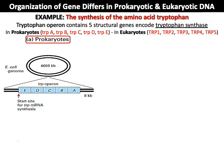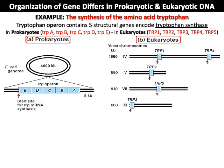As an example of the difference between prokaryotes and eukaryotes, we'll look at the synthesis of the amino acid tryptophan. The tryptophan operon contains five structural genes encoding tryptophan synthase in prokaryotes, named tryptophan A, B, C, D, and E, while in eukaryotes the genes are called tryptophan 1, 2, 3, 4, and 5. In prokaryotes, all five genes are located on the DNA under one start site for transcription, meaning they share a single promoter. In eukaryotes, each gene is separated from the others by long non-coding regions.